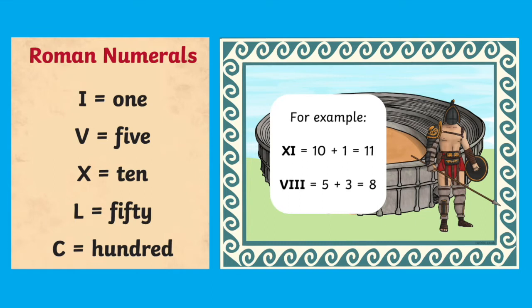Here's an example of how this works. XI is 11 because X is 10 and I is 1. Together 10 and 1 make 11. VIII is 8 because V is 5 and III is 3.